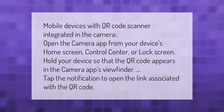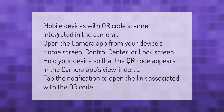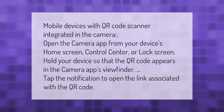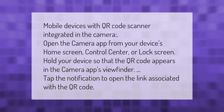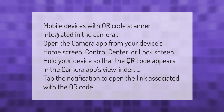On mobile devices with a QR code scanner integrated in the camera, open the camera app from your device's home screen, control center, or lock screen. Hold your device so that the QR code appears in the camera app's viewfinder.